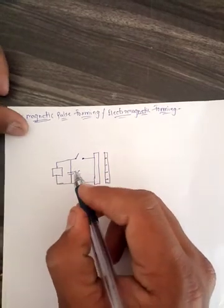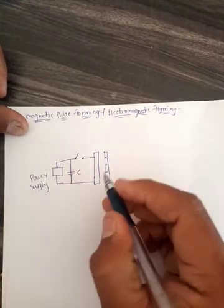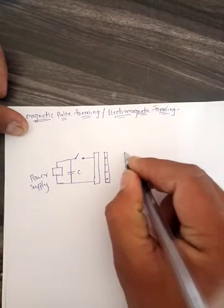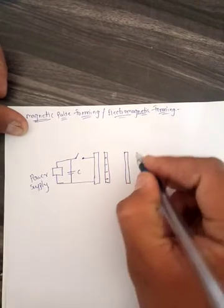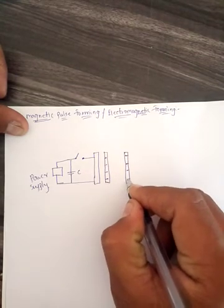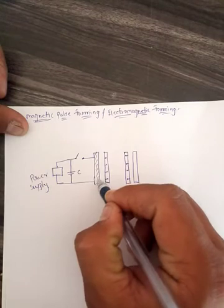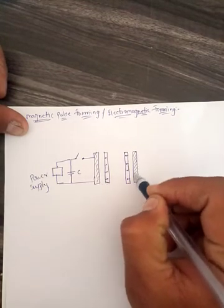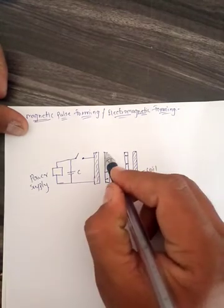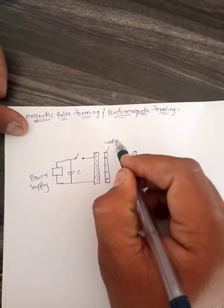This is Capacitor, Power Supply. These are the coils. These two are workpieces.